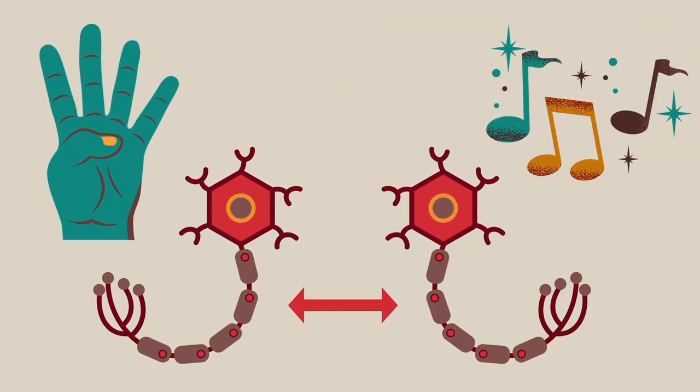This is an example of long-term potentiation because the connections between the neurons that control your fingers and the neurons that process musical information have become stronger as a result of repeated or prolonged activation.